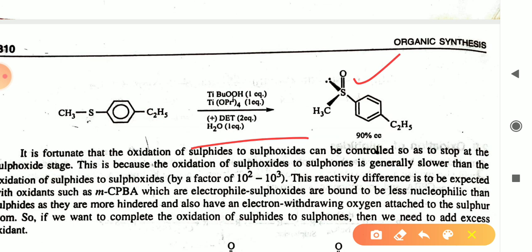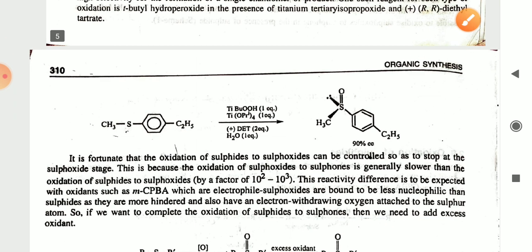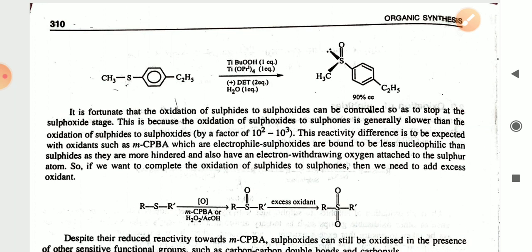The oxidation can be controlled to stop at the sulfoxide stage. This is because the oxidation of sulfoxide to sulfone is generally slower than the oxidation of sulfide to sulfoxide. This reactivity difference is explained by electrophilic oxidizing agents such as MCPBA: sulfoxides are less nucleophilic than sulfides because they are more hindered and have an electron-withdrawing oxygen attached to sulfur.